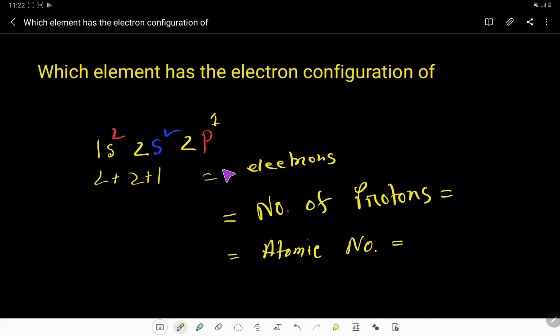So basically we are getting two plus two plus one, that is five electrons. We know that in a neutral atom, in a neutral element or atom, the number of electrons is equal to number of protons.